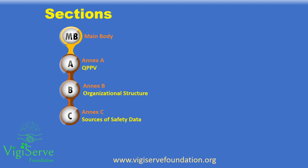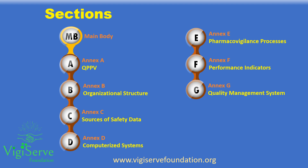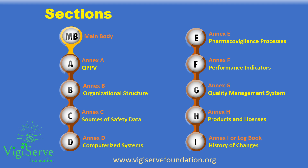Annex C pertains to the sources of safety data. Annex D pertains to information on computerized systems and databases. Annex E pertains to pharmacovigilance processes, including SOPs and working practices. Annex F pertains to performance indicators that provide information on the compliance status. Annex G pertains to the quality management system, including audits and inspections. Annex H pertains to the list of authorized products. Annex I, or the logbook, contains the revision history of all versions of the PSMF.